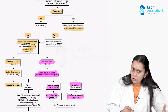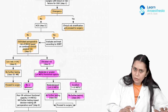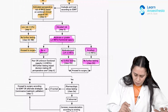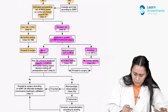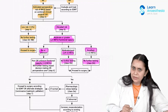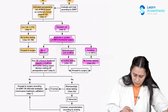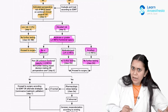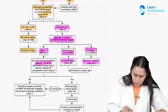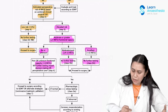When functional status is unknown or less than 4 METs — that is poor functional status — more testing would be required. In this case, stress echocardiography can be performed to help in our decision making. With further testing, it will help guide our management decision.